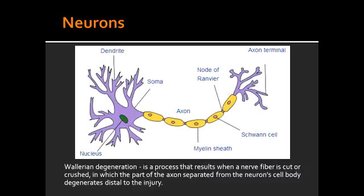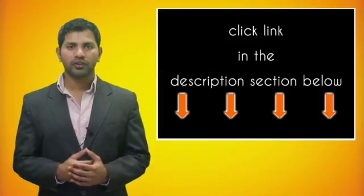What happens if an axon gets injured? If an axon gets injured, it undergoes Wallerian degeneration. In Wallerian degeneration, the degeneration takes place distally to the injury, and axonal retraction happens proximally. This allows for a potential regeneration of an axon if the axon is of the PNS.